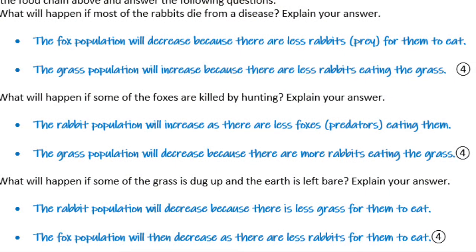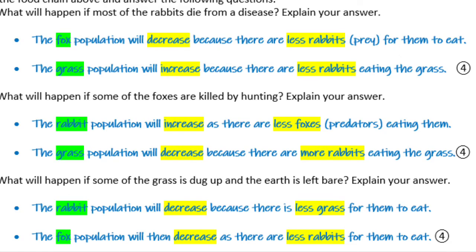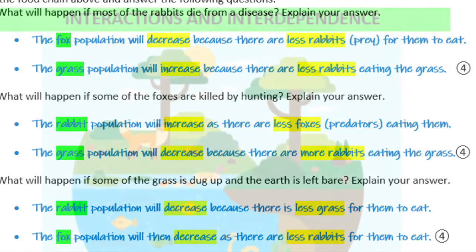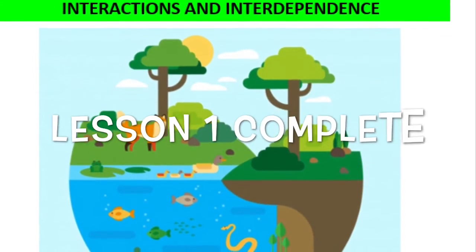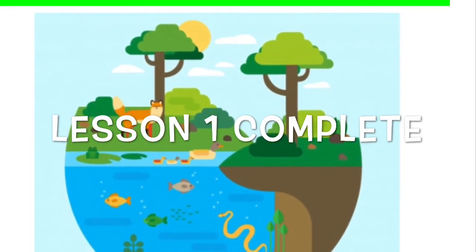Pause on either of the next two pictures so that you can mark your last two answers. Remember that if you don't have the key words, which are highlighted in yellow, then you can't get the mark — unless you used a slightly different word with the same meaning, of course. Well done, you've completed Lesson 1 on Interactions and Interdependence.